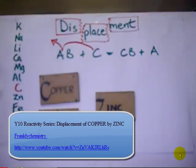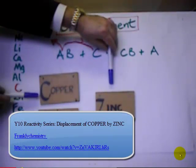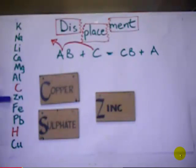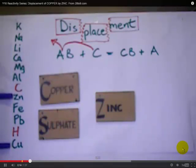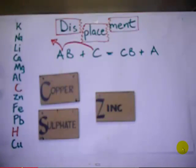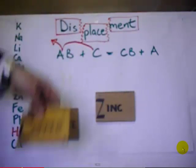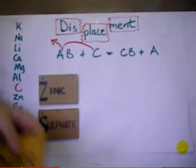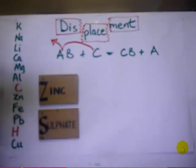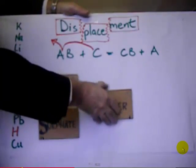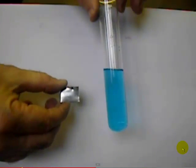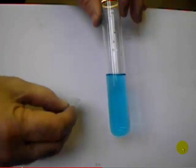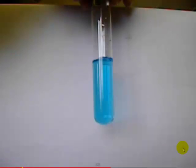Let's take a look at the displacement reaction where zinc metal displaces copper from its compound, copper sulfate. Here's the location of zinc in the reactivity series — and copper. Zinc is considerably more reactive than copper and can displace it from its compound. That blue solution of copper sulfate will change to form a colorless clear solution of zinc sulfate, and copper will be produced. Here we have the starting materials: a blue solution of copper sulfate and shiny grey zinc foil. Watch how the shiny grey surface immediately blackens as we drop it into the copper sulfate.